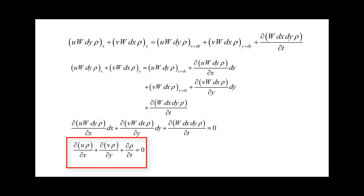The continuity equation is an embodiment of mass conservation. The first term relates to mass crossing the boundary in the x direction and how that changes; the second term is mass crossing the boundaries from top to bottom (y direction); and the last term is mass stored inside the control volume.